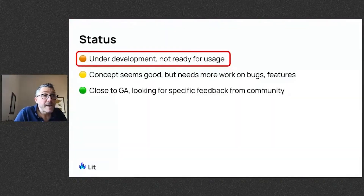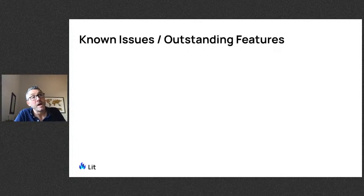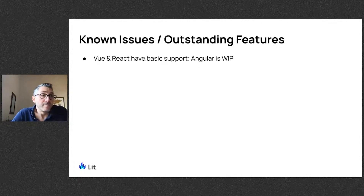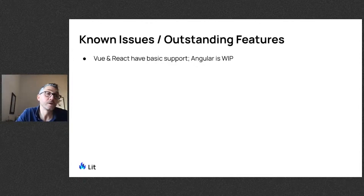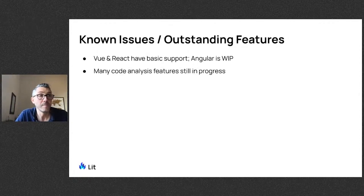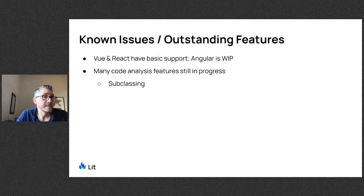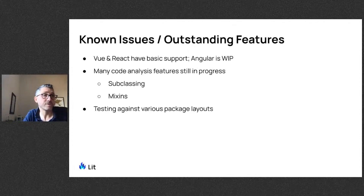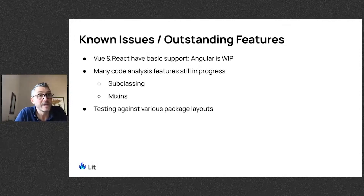Looking at the status of this package, it's still under development and not quite ready for usage, though it's getting close. Vue and React basic support for generation is already done. The Angular one is still a work in progress because there's a bit more boilerplate to integrate with there. We still need some additional code analysis features to cover most common use cases, and we have PRs up for a lot of these now. We know we need to cover subclassing and mixins — those aren't quite done in the analysis yet. We'll also go through a round of testing against real-world code to make sure the static analysis can handle various package layouts.